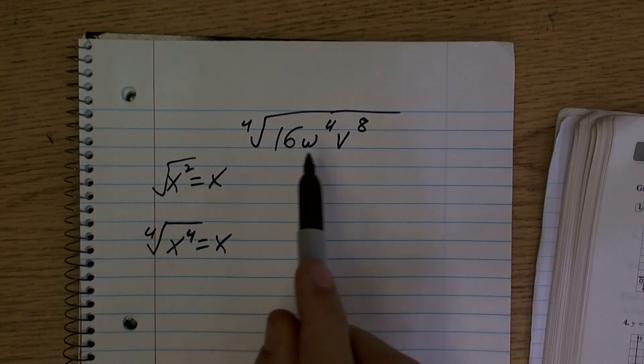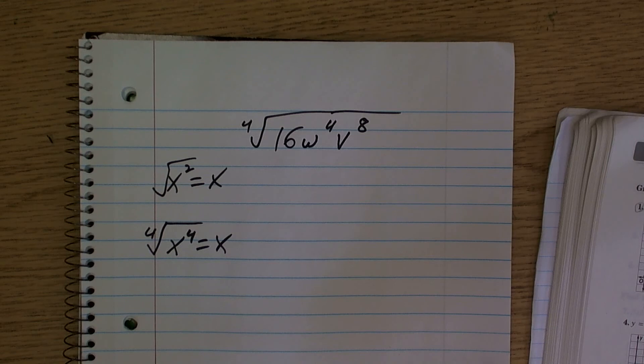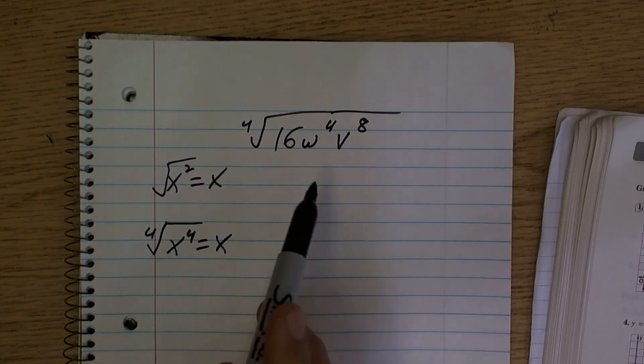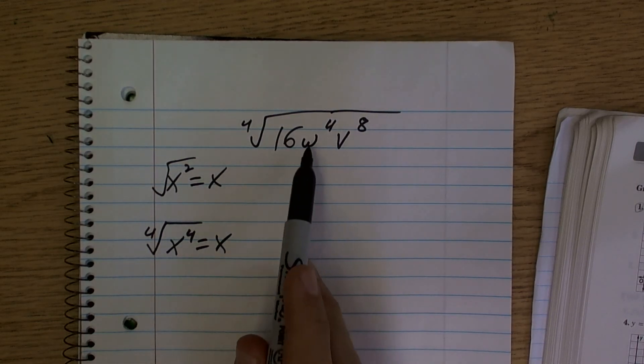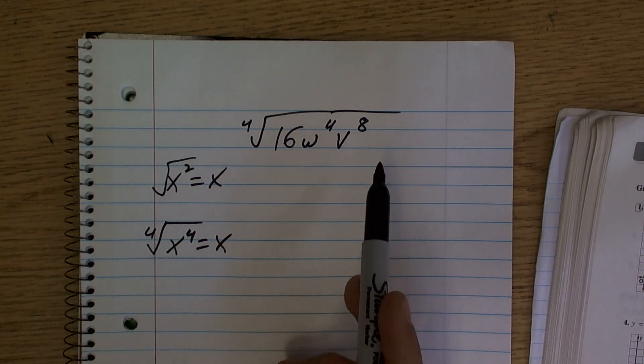In our last problem we wanted to get everything to represent it as a square so we could cancel it out. Well now what we want to do is see what numbers we can represent as to the fourth power.